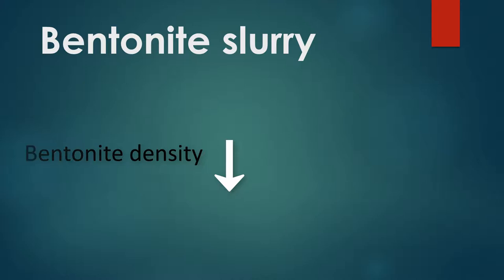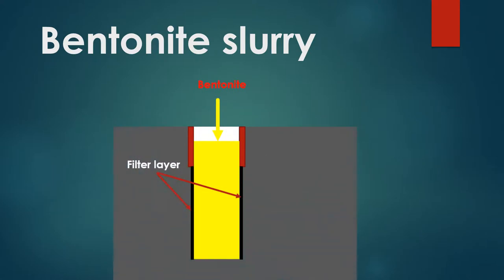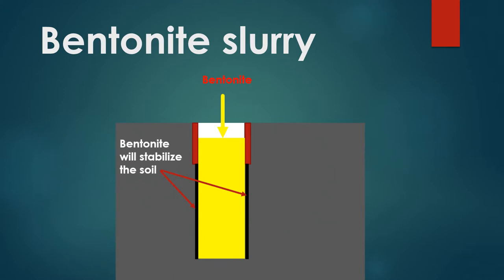The bentonite stabilizes the soils of bores or excavation by the following mechanism. The bentonite slurry will penetrate the soil and leave a layer of bentonite on the surface of the soil. The bentonite particles will form a filter cake on the surface of excavation when the pressure of the bentonite mixture is higher than the pressure of pore water in the excavated soil. The filter layer will work as an impermeable layer, and it will allow the bentonite slurry to exert full hydrostatic pressure on the excavated soil wall surface.